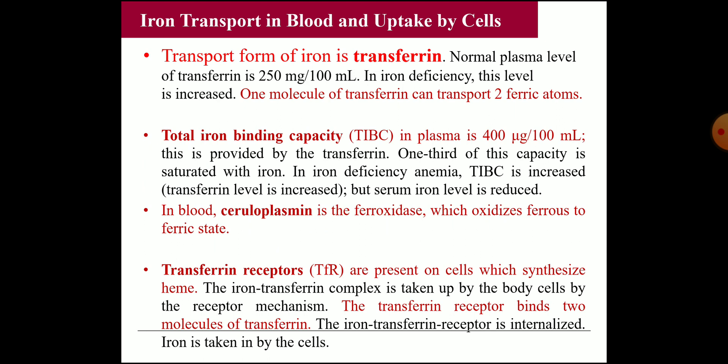The transport form of iron is transferrin. Ferrous iron taken into the blood is oxidized to ferric by ceruloplasmin (ferroxidase activity), and ferric iron then combines with apotransferrin to form transferrin — the mode of transferring iron in the blood. Remember: ferritin is the storage form; transferrin is the transport form. Normal plasma transferrin level is 250 mg per 100 ml; it is increased in iron deficiency anemia. One molecule of transferrin can combine with two atoms of iron in the ferric form.